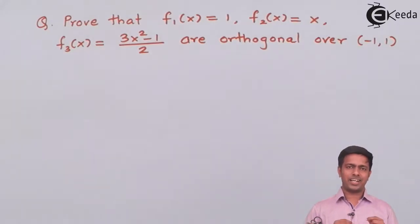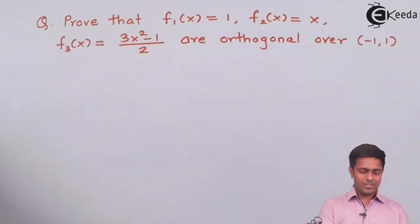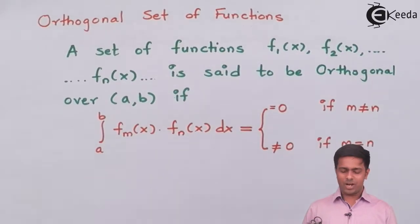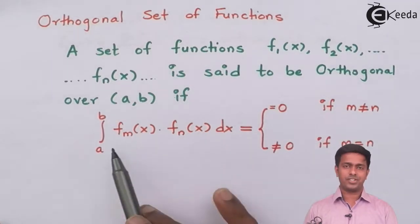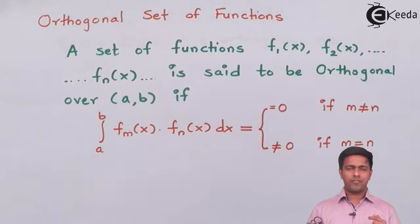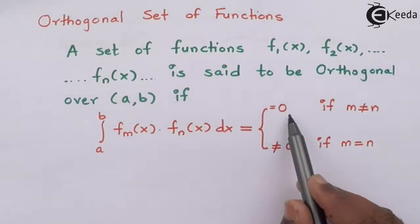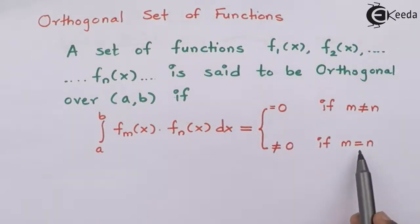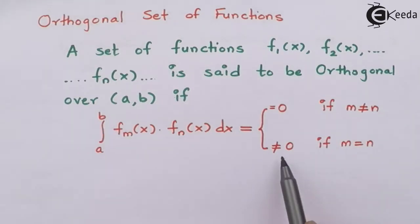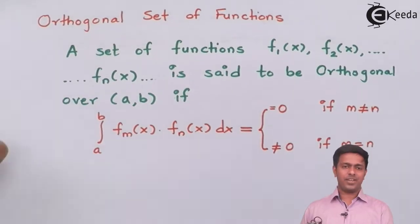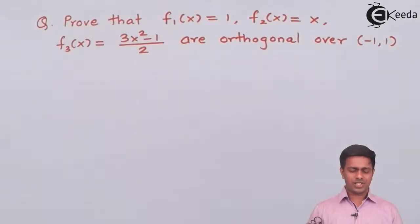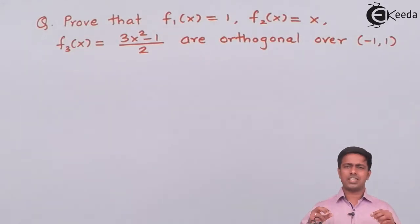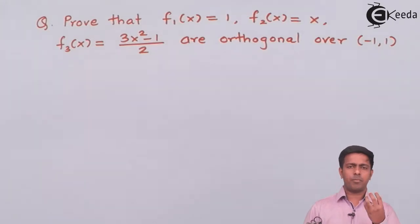What is the condition to prove that given sets of functions are orthogonal? This is the condition already covered in the previous numerical. If we take two different functions fm(x) and fn(x) from the set of functions and prove that their integration is equal to 0, and also prove that if we take the same function its integration is not equal to 0, then we say the given set of functions are orthogonal.